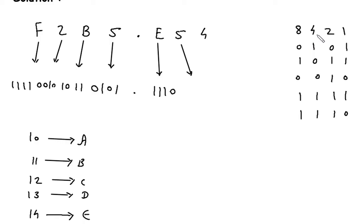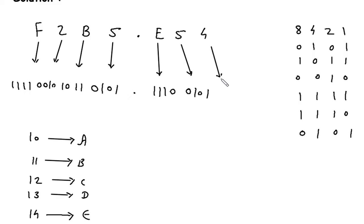Then 5 means 4 plus 1. So this will be 0, 1, 0, 1. Then 4 means here it is 4, so this will be 0, 1, 0, 0. The binary for 4 is 0100.